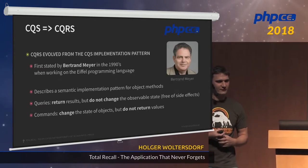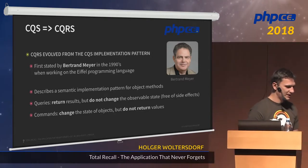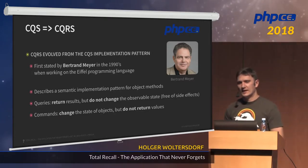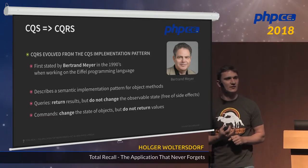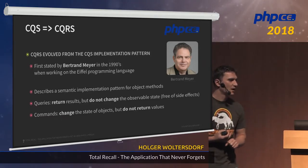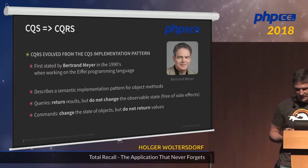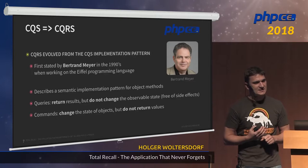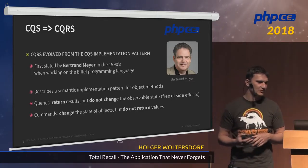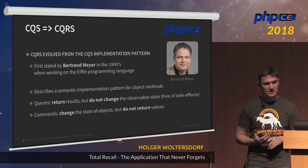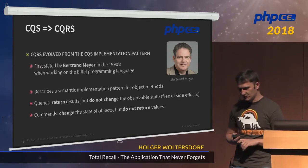CQRS evolved from CQS, which is an object implementation pattern. It was first stated by Bertrand Meyer in the 1990s when he was working on the Eiffel programming language. It describes a semantic implementation pattern that says queries need to return something but do not change the observable state of an object. And commands should change the state of an object but do not return anything.